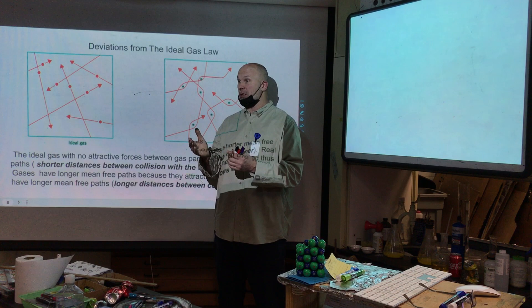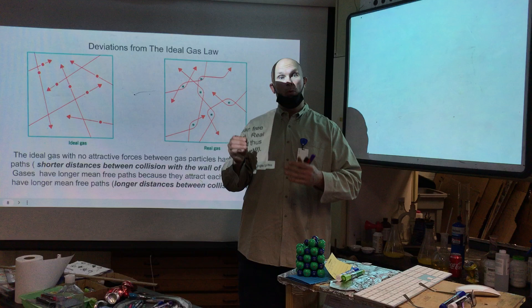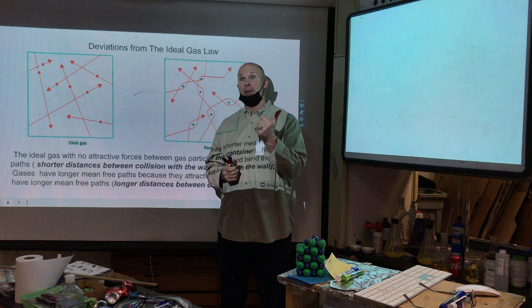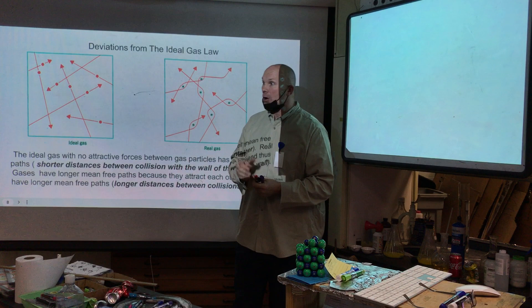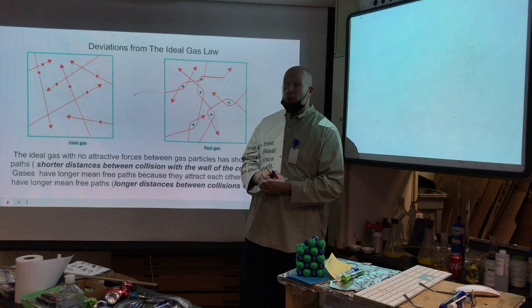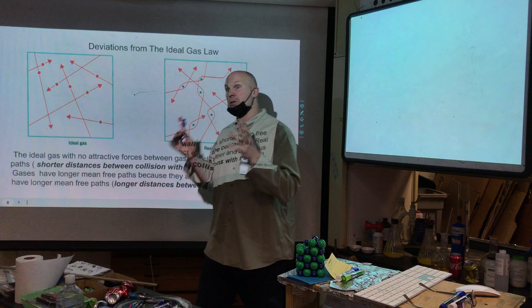Real gases take up space. An ideal gas — one that we can use in all of our gas law equations, whether it be PV equals nRT, PV over T equals PV over T, molecular mass, or PM over RT if we're solving for density, or kinetic molecular theory equations for root mean squared or molar kinetic energy — all are under the guideline that gases are behaving in a certain fashion.